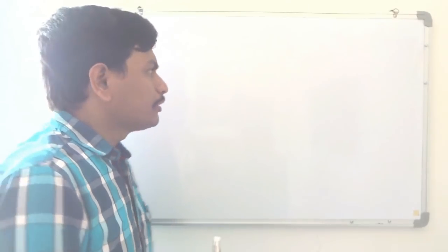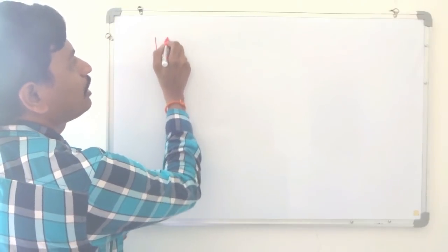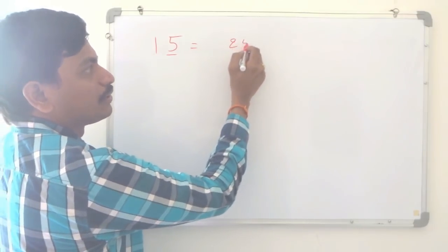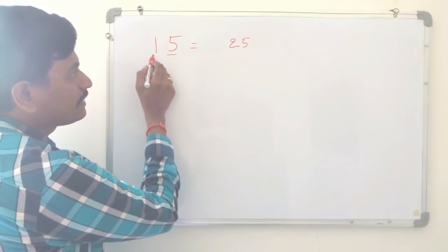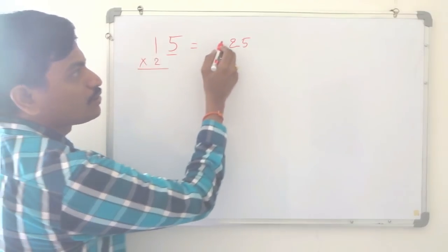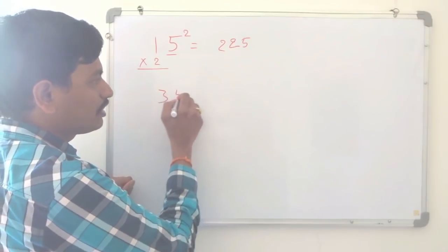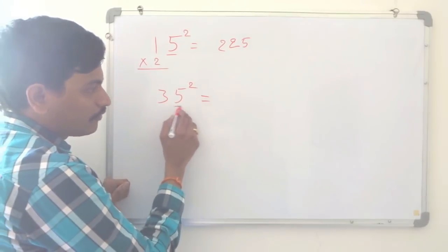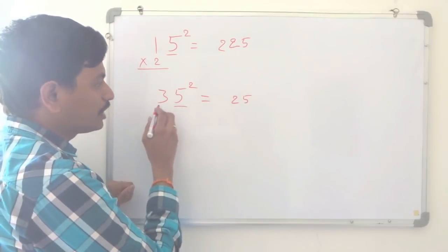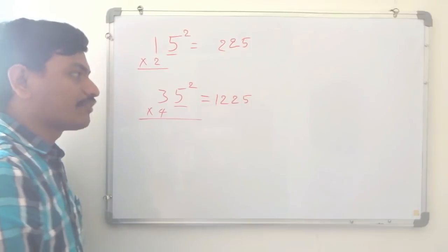The first tip: numbers ending with 5. I'll take a small number, 15. It ends with 5, so the square ends with 25. Look at the digit before 5, which is 1. The next number after 1 is 2, so 1 times 2 is 2. Therefore, 15 squared is 225. Let's take another example: 35 squared. It ends with 5, so the square ends with 25. Take the digit 3; the next number is 4. Three 4s are 12, so 35 squared is 1225.